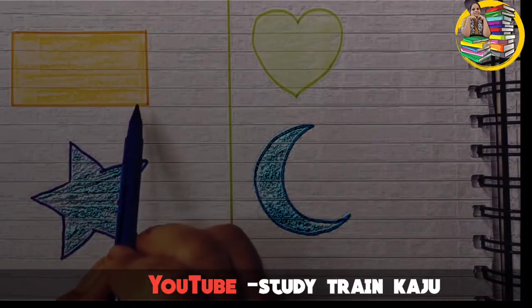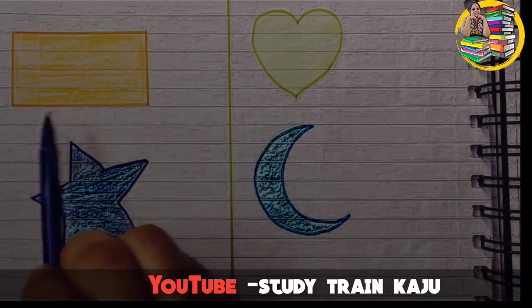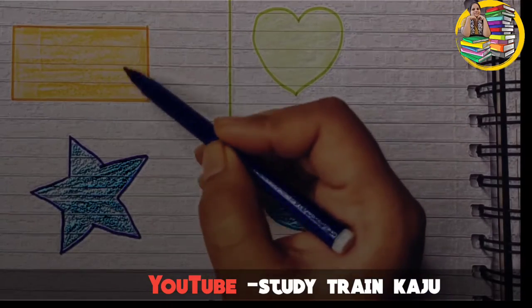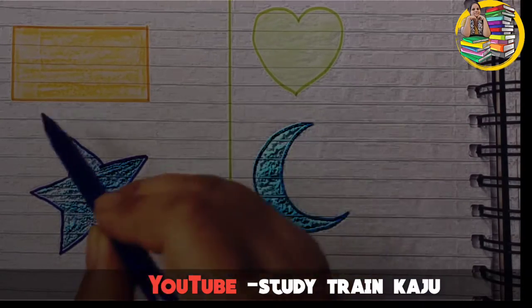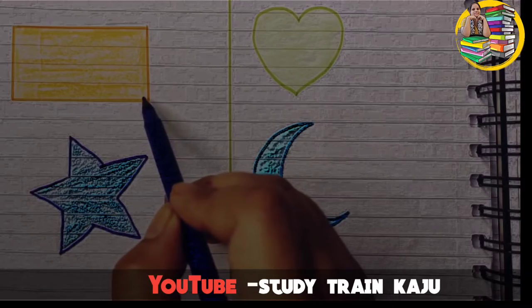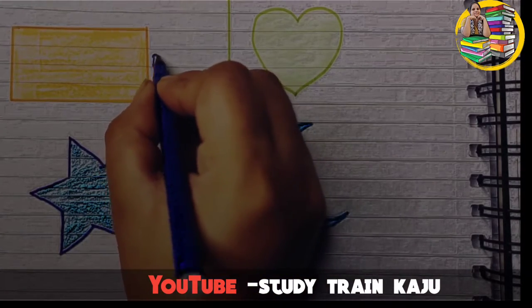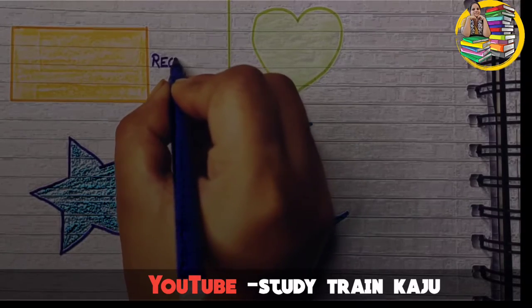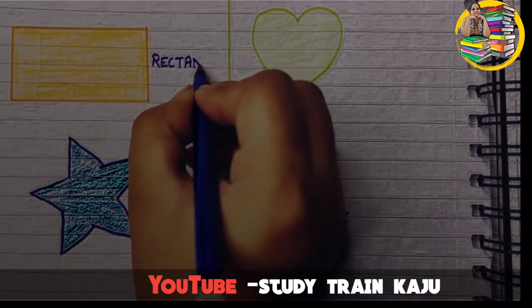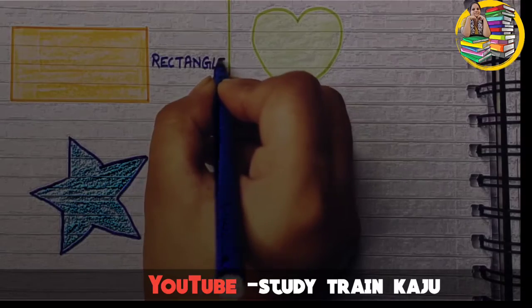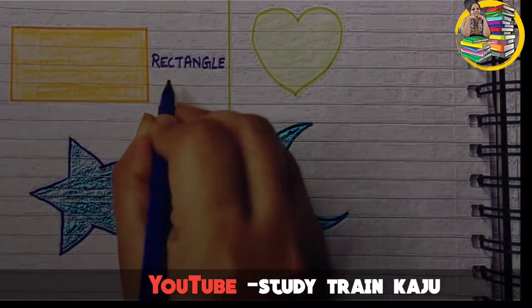The next shape also has 4 sides and 4 corners. In this, 2 opposite sides are equal and 1 side is longer than the other one. It is a rectangle. R-E-C-T-A-N-G-L-E. Rectangle.